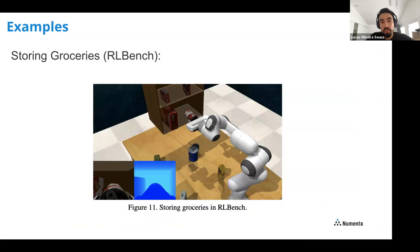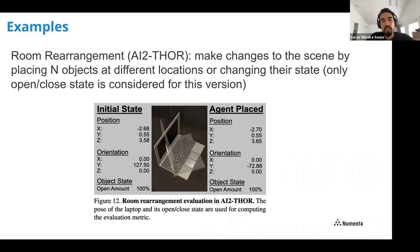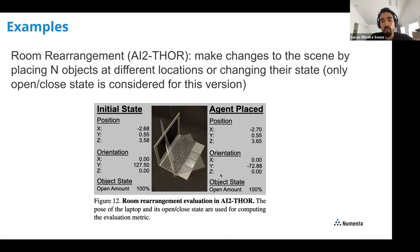Another example is storing groceries in RL Bench, from Berkeley or Stanford — one of the most advanced environments available. An articulated arm must store groceries in a cabinet. There's also room rearrangement in AI2-THOR: the agent must make changes to a scene by placing objects at different locations or changing their state, such as opening or closing a computer. The task is defined by initial states, object orientations, and whether objects are open or not.